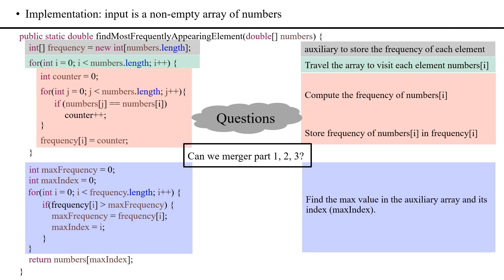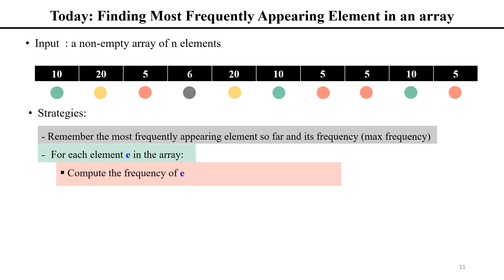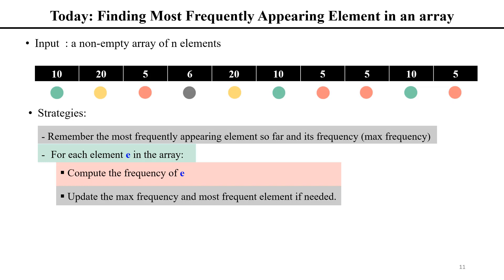Now, can we merge the three parts together? We're computing frequency values and storing them all in an auxiliary array, but do we really need to store all those frequencies? After all, we only care about the max frequency. So we merge the three parts like this: instead of using a whole auxiliary array, we only use two variables — one to store the most frequent element and another for its max frequency. We use a for loop to visit each element, compute its frequency, and along the way update the max frequency and most frequent element if needed. After the loop, we return the most frequent element.